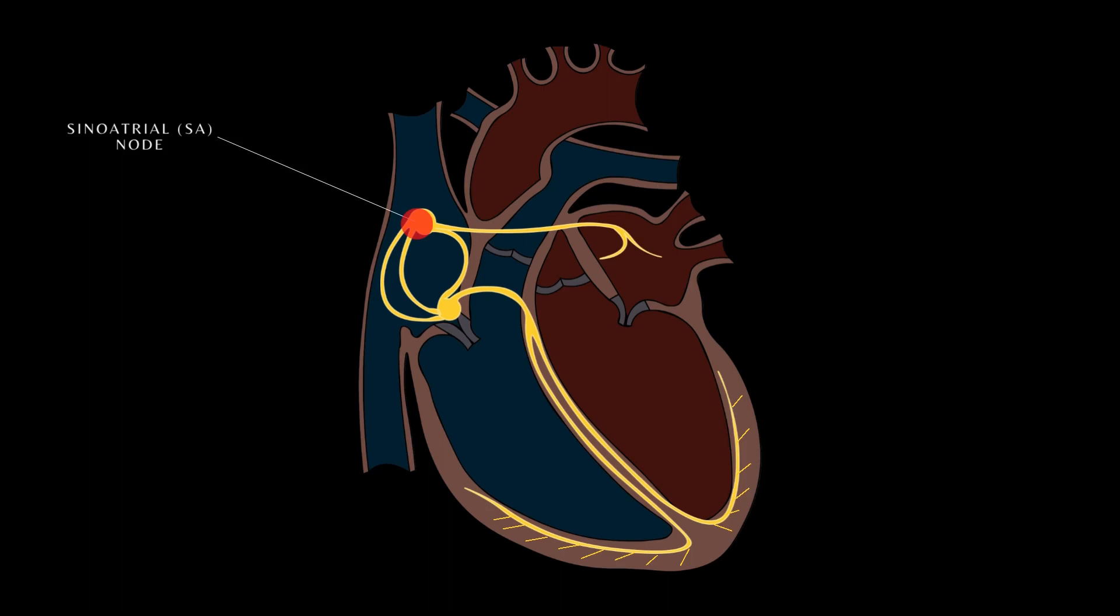First is the sinoatrial or SA node, made up of specialized cardiomyocytes located in the posterosuperior wall of the right atrium. Bachmann's bundle is a branch of the anterior internodal tract situated on the inner wall of the left atrium. The anterior, middle, and posterior internodal tracts pass through the right atrium connecting the SA node and AV nodes.